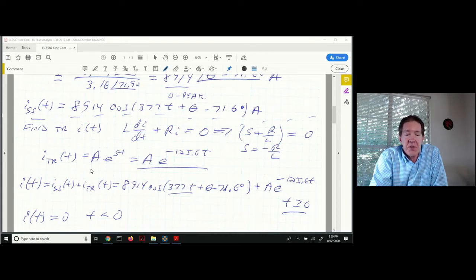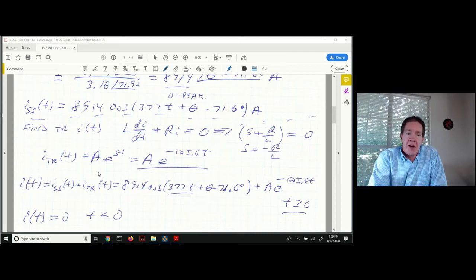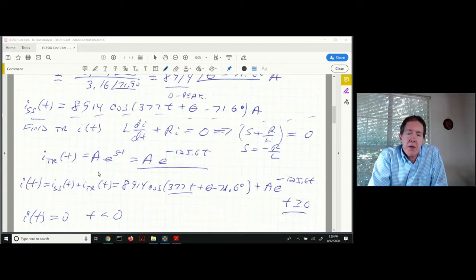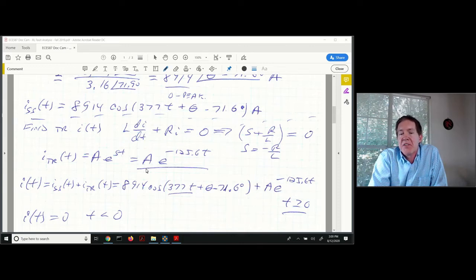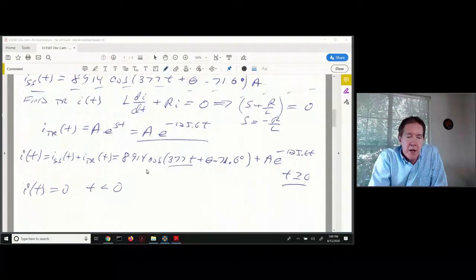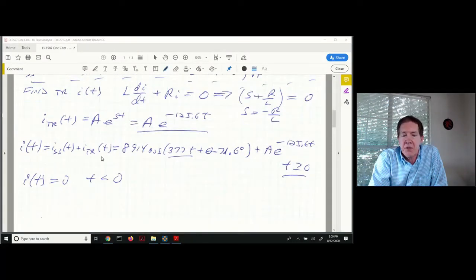So the transient portion is what we saw in the theory part of the lecture: Ae^(st), where s is minus R/L. We have this term A that we need to compute. The transient part is Ae^(minus 125.6 times t). Then I simply append these two solutions, the steady state part and the transient part, to give me the total solution, defined for time greater than or equal to zero.